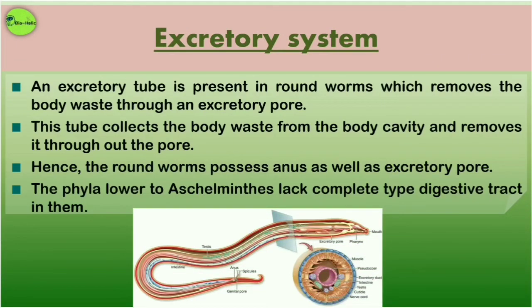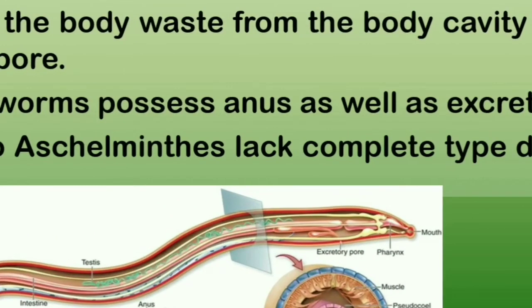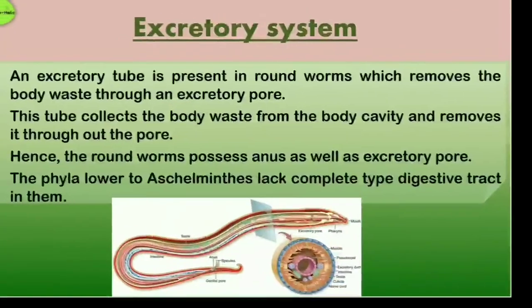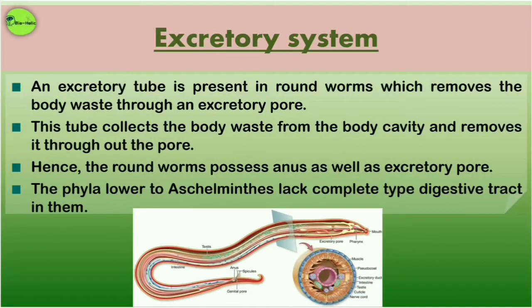Now the excretory system in roundworms: an excretory tube is present which removes body waste through an excretory pore, as you can see here. This excretory tube collects the body waste from the body cavity and removes it through the excretory pore. Hence roundworms possess both an anus, due to their complete digestive system, and an excretory pore.